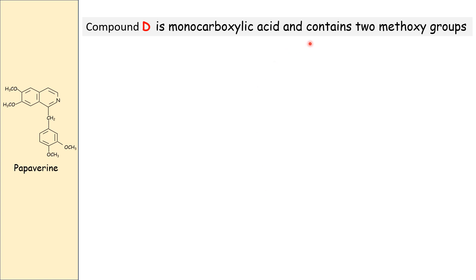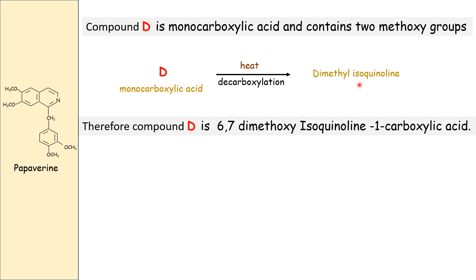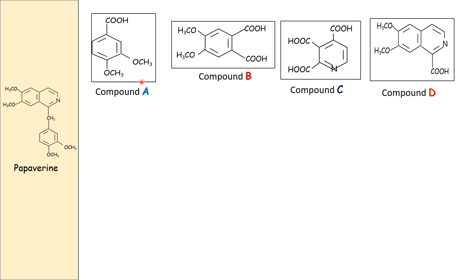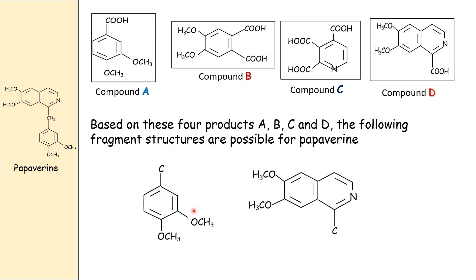Compound D is a monocarboxylic acid containing two methoxy groups. When heated after decarboxylation, we get dimethylisoquinoline. Therefore the structure of compound D must be 6,7-dimethoxyisoquinoline-1-carboxylic acid. By knowing the structures of all four compounds A, B, C, and D, we can assign the fragment structures for papaverine.